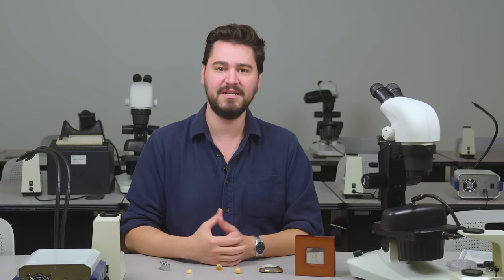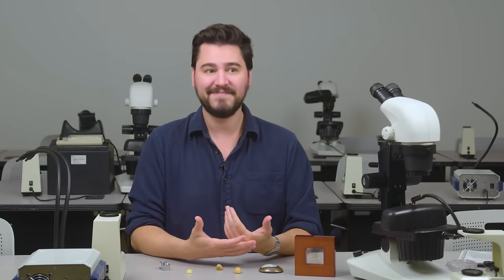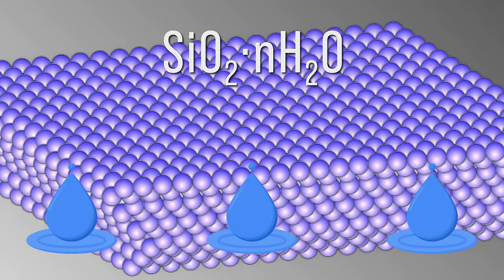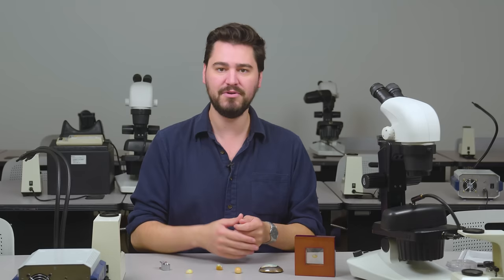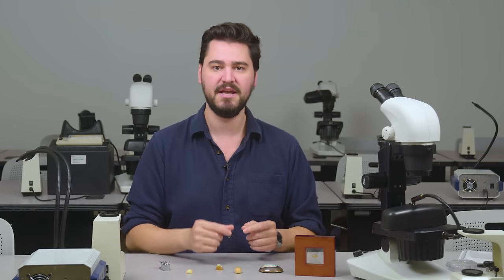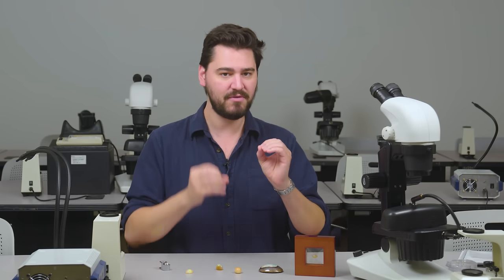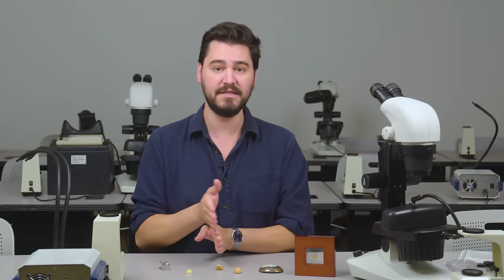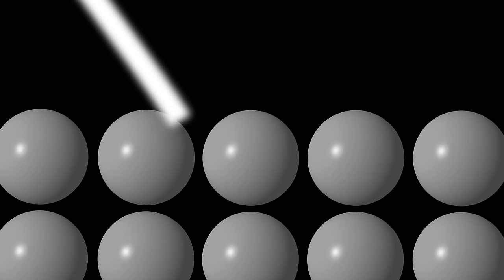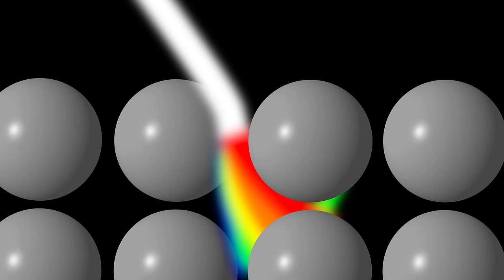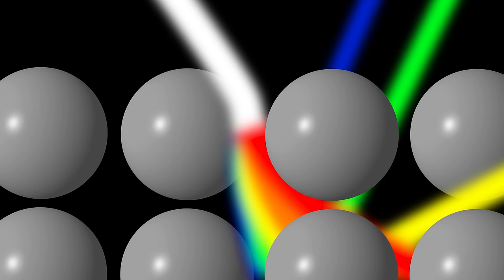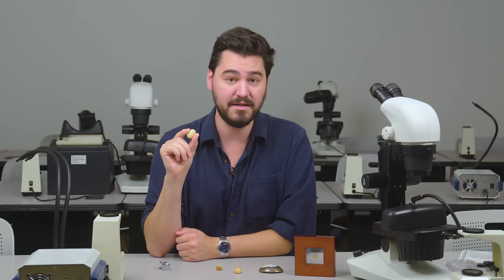What is an opal? It's beautiful, of course, and it's one of the most sought after gemstones in the world. If you want to get technical, it's a hydrated silica — actually considered a mineraloid because it lacks a crystalline structure. Instead, it's composed of tiny silica spheres. When these spheres are just the right size and arranged in orderly stacks and rows, they can diffract and bend light, causing unique color patterns known as play of color. And that's what makes opal so famous.